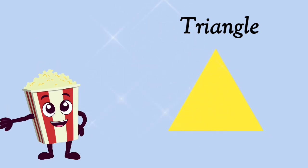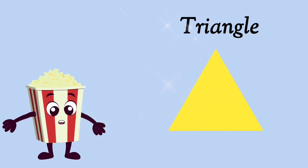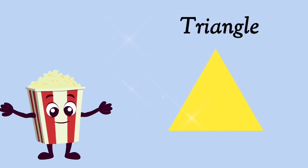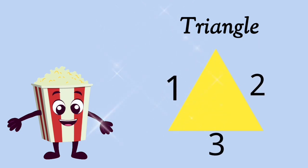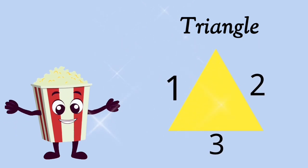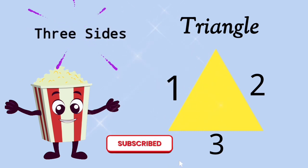How many sides does a triangle have? Let's find out. 1, 2, 3. A triangle has 3 sides.